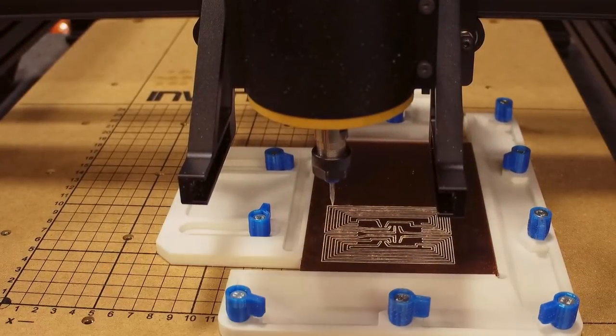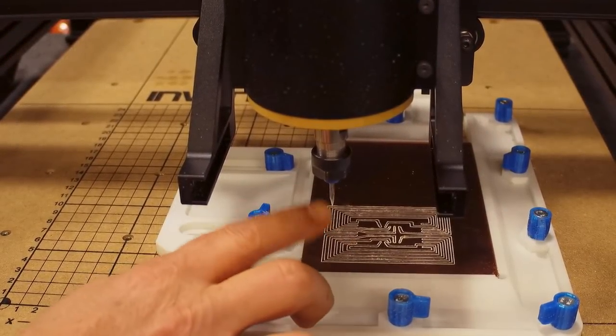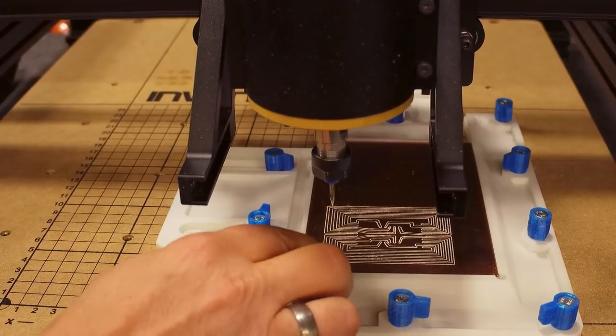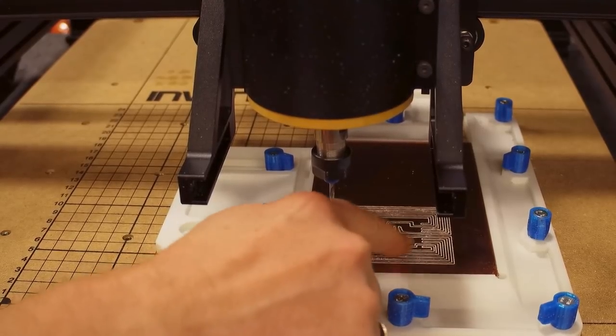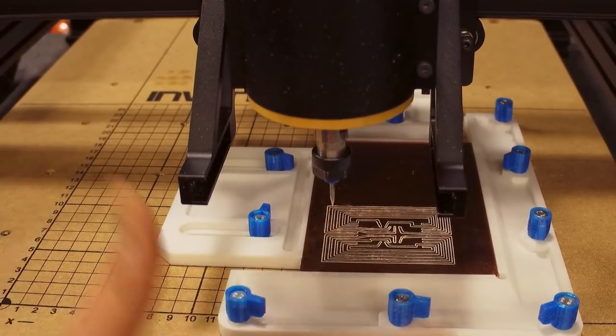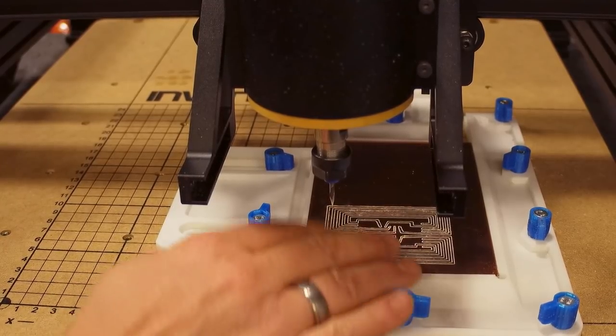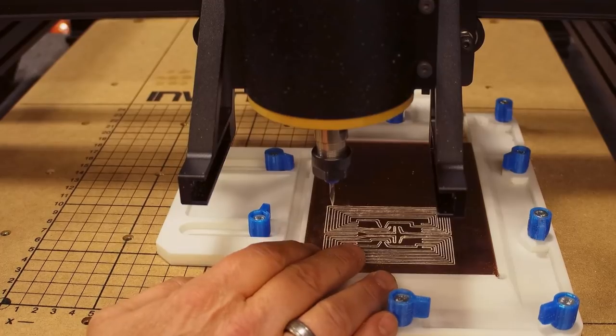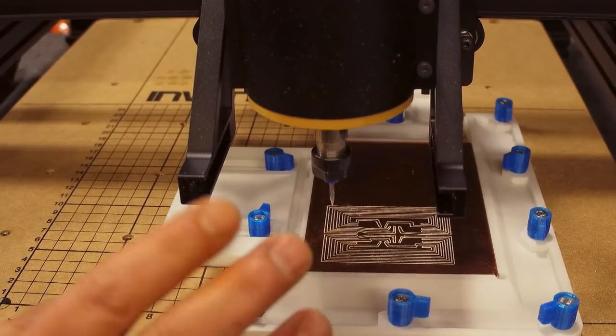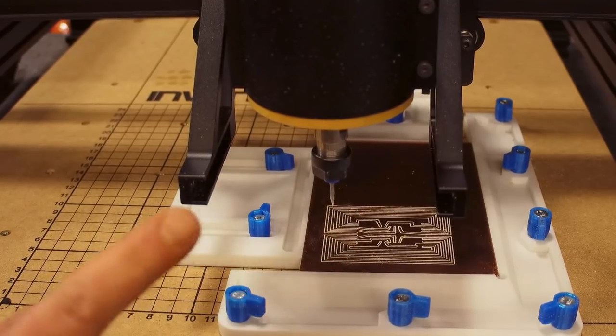All right, so the traces are done. What I'm going to do now, I'm not going to change the bit, I'm still going to use the same bit. And I'm going to remove the extra copper, like the one between the traces. This is optional, but it makes soldering a lot easier. So what I'm going to do now, I'm going to load that G-code and restart the machine.